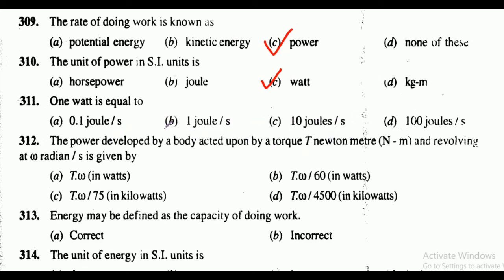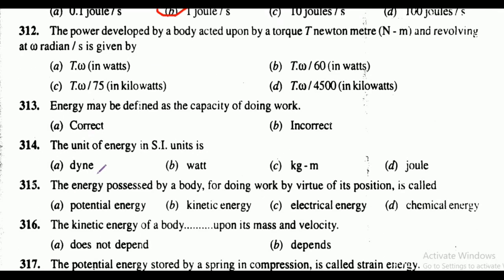Question 311: one watt is equal to — the correct answer is option B, that is one joule per second. Question 312: the power developed by a body acted upon by a torque T newton meter and revolving at omega radian per second is given by — the correct answer is option A, that is T omega.